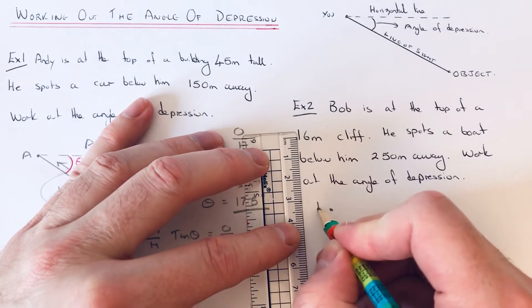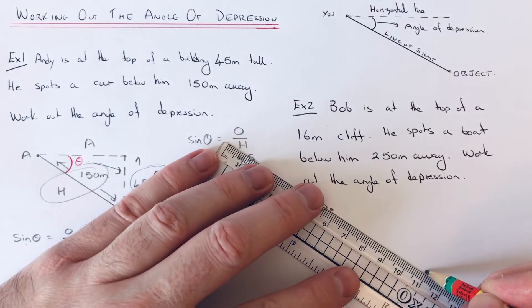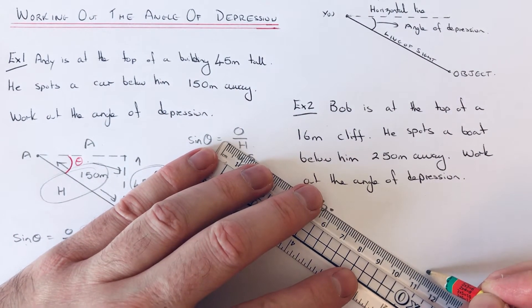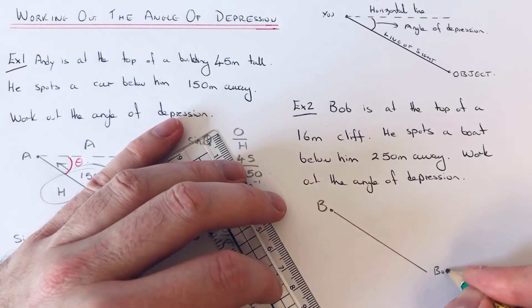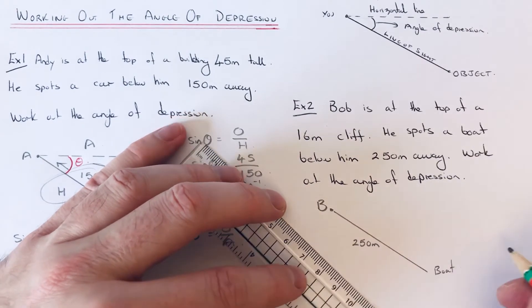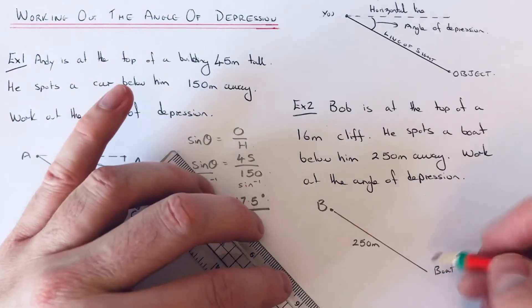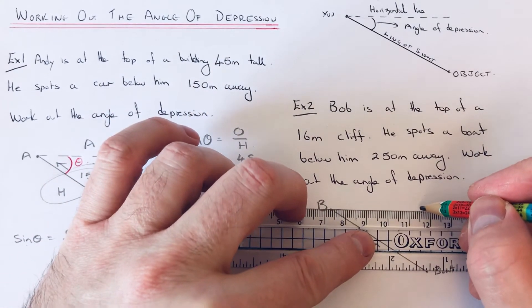So we've got Bob at the top of a cliff. He spots a boat about 250 meters away, so this distance here is 250. Let's make a right angle triangle first.